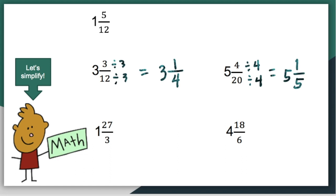Let's go to the next example: one and twenty-seven over three. Remember that twenty-seven over three is the same as twenty-seven divided by three, and you know that you will get a whole number when you divide this. So twenty-seven divided by three will give us nine. If we add it to the whole number here, we'll have a final answer of ten. So one and twenty-seven over three will give us ten.